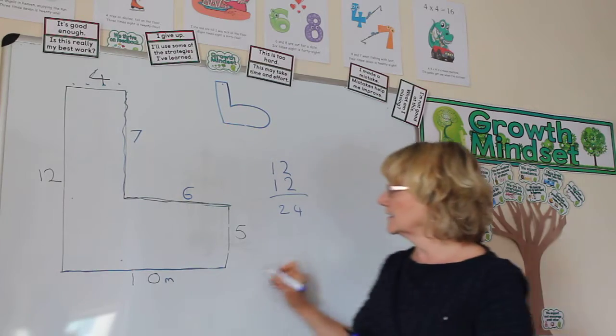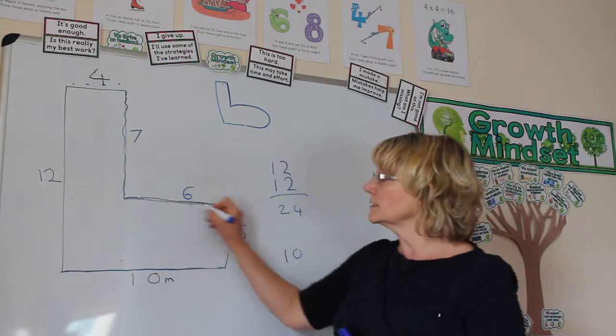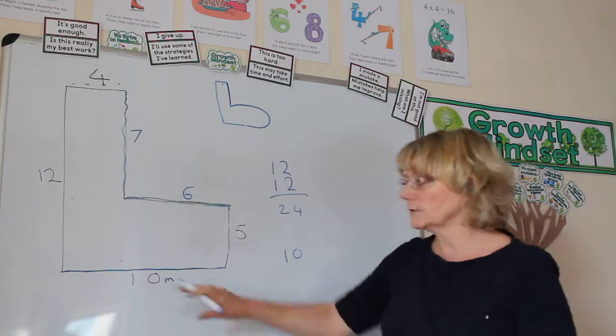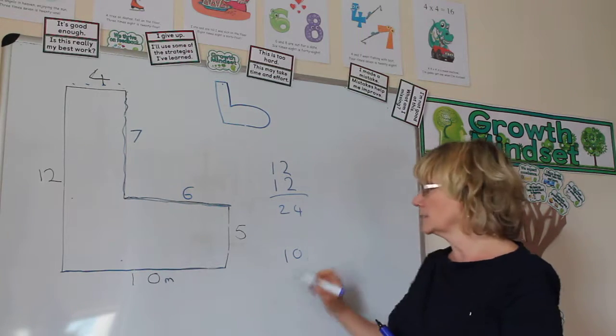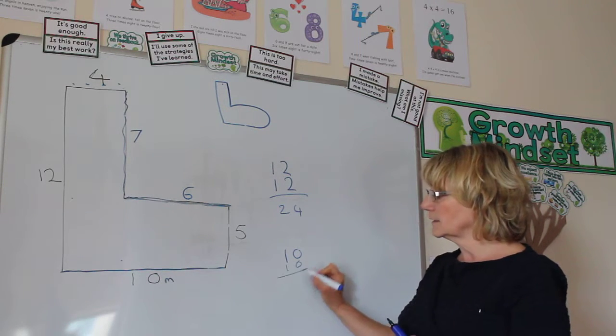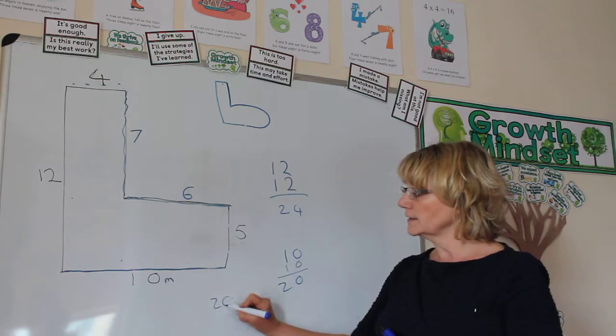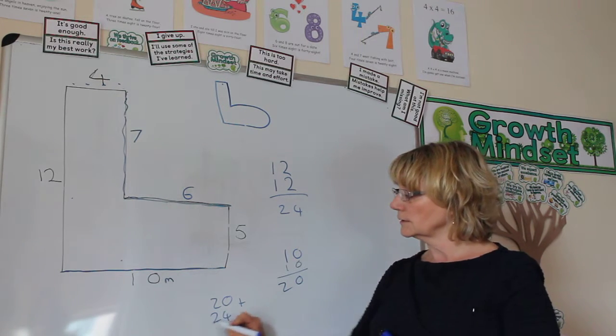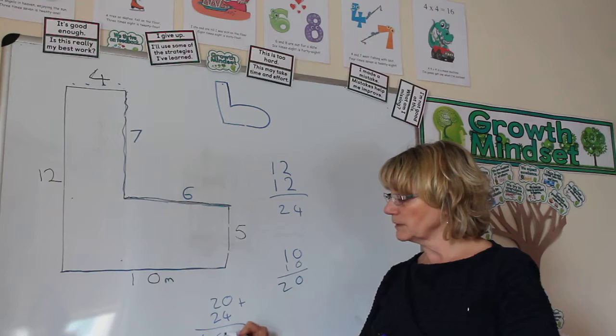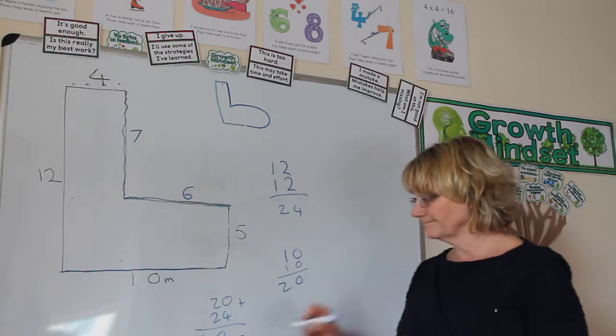And this side is 10, and its opposite, 6 plus 4, will always equal the same as that. So they're equal to 10. 10 plus 10 is 20. We can do 20 plus 24, which is 48 metres. All right.